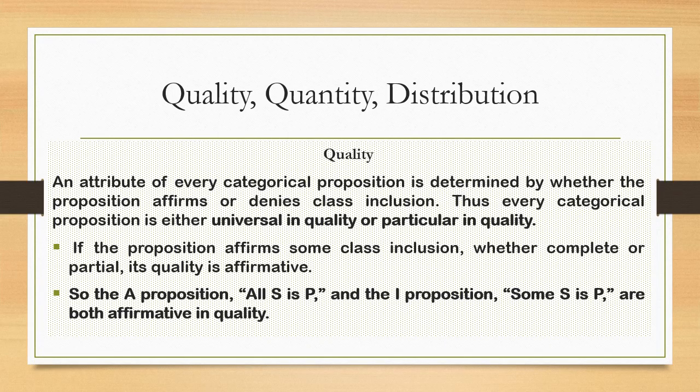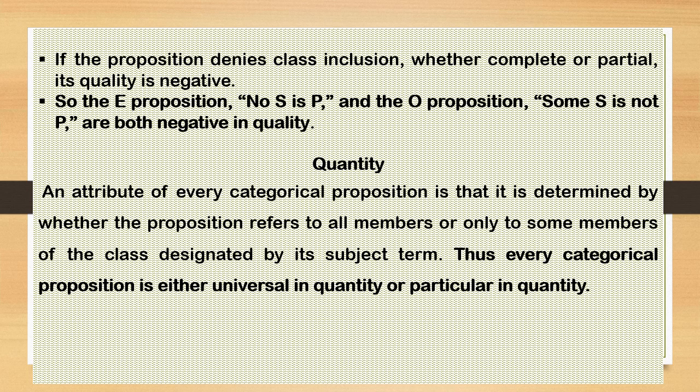Categorical propositions are determined on the basis of their quality. Quality simply tells us whether the categorical proposition is affirmative or negative. The affirmative categorical propositions are the universal affirmative 'All S is P' (A) and the particular affirmative 'Some S is P' (I). The negative propositions are 'No S is P' (E — universal negative) and 'Some S is not P' (O — particular negative).